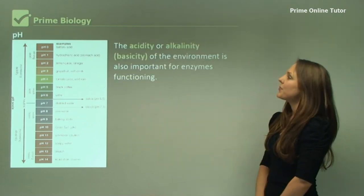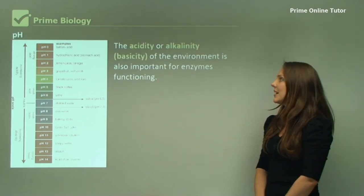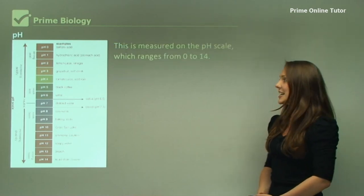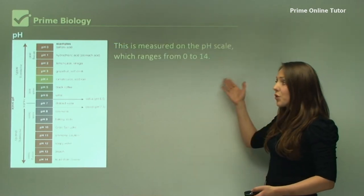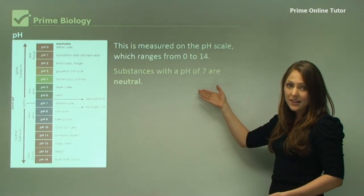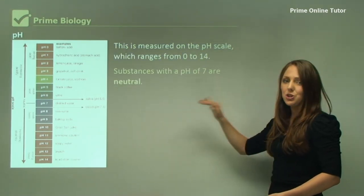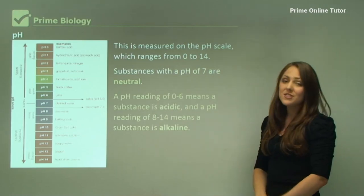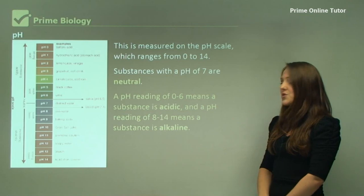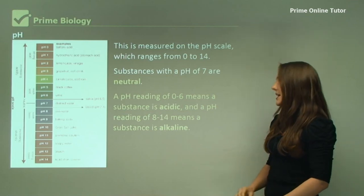The acidity or alkalinity of the environment is also important for enzymes and their functioning. This is measured from 0 to 14 as I've just said. So again, a recap: substances that are 7 are neutral, a pH reading of 0 to 6 means a substance is acidic, and a pH reading of 8 to 14 means a substance is alkaline.